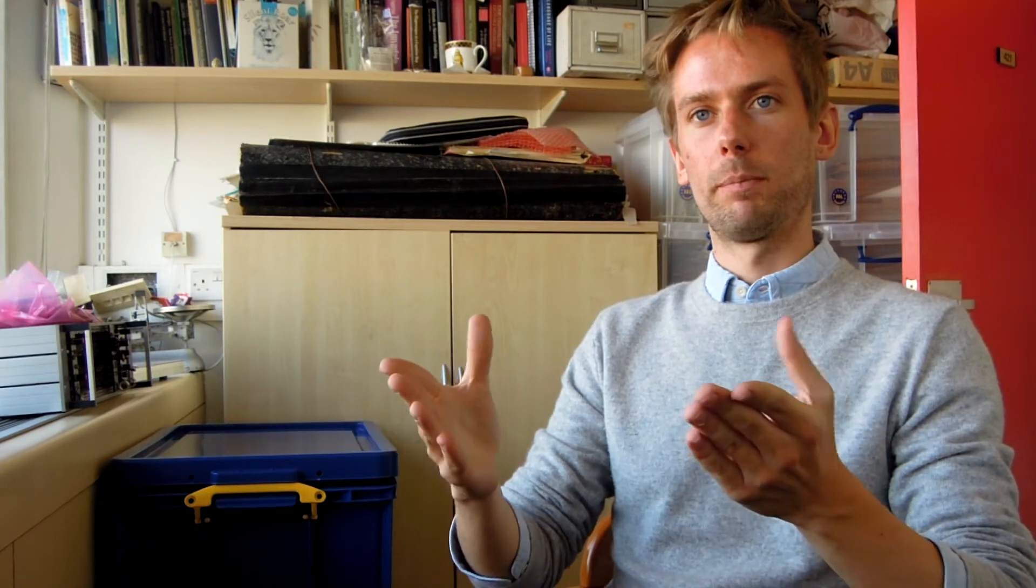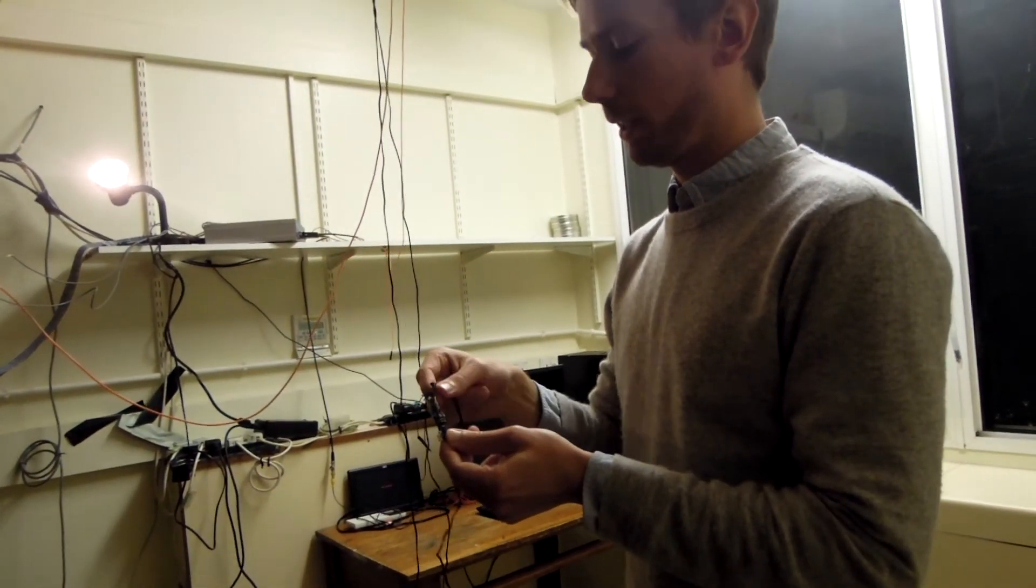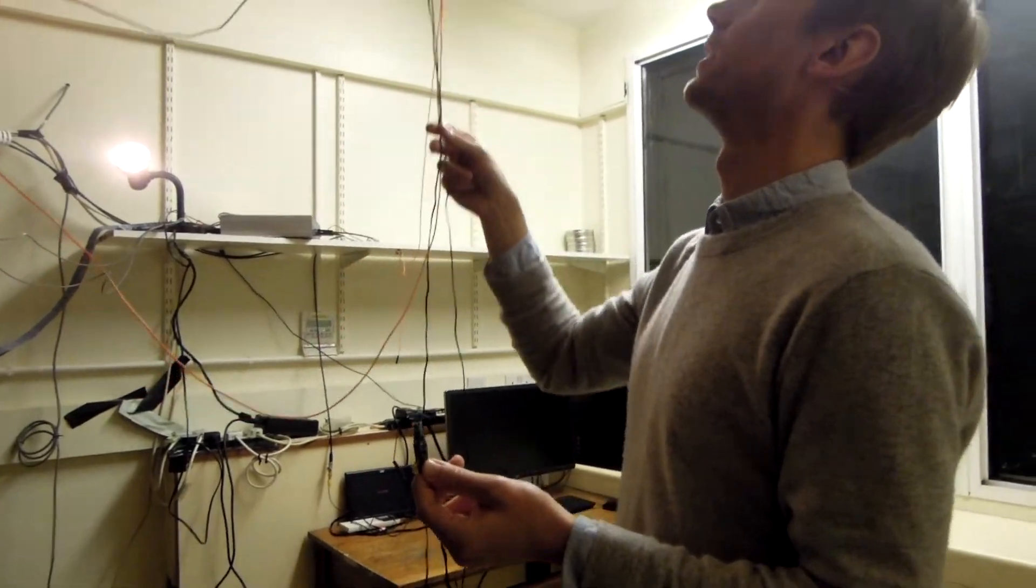So we tested this idea that grid cells do actually act as a ruler for space by recording from rats' brains. They explored an environment which put the sensory inputs to grid cells in conflict with the self-motion inputs which tell the rest of the brain how fast the animal is moving at its velocity.